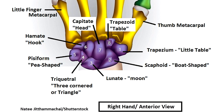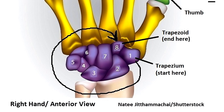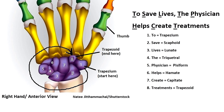The easiest way to remember the location of the carpals is to use a mnemonic. Looking at the right hand from the anterior position with the palm facing you, the metacarpal of the thumb articulates with the trapezium bone. Both thumb and trapezium start with T and contain the letter M, so that's where the mnemonic starts. Going clockwise and ending with the trapezoid bone, the mnemonic is: To Save Lives The Physician Helps Create Treatments. Note that if you're looking at the anterior view of the left hand, you would go counterclockwise instead.